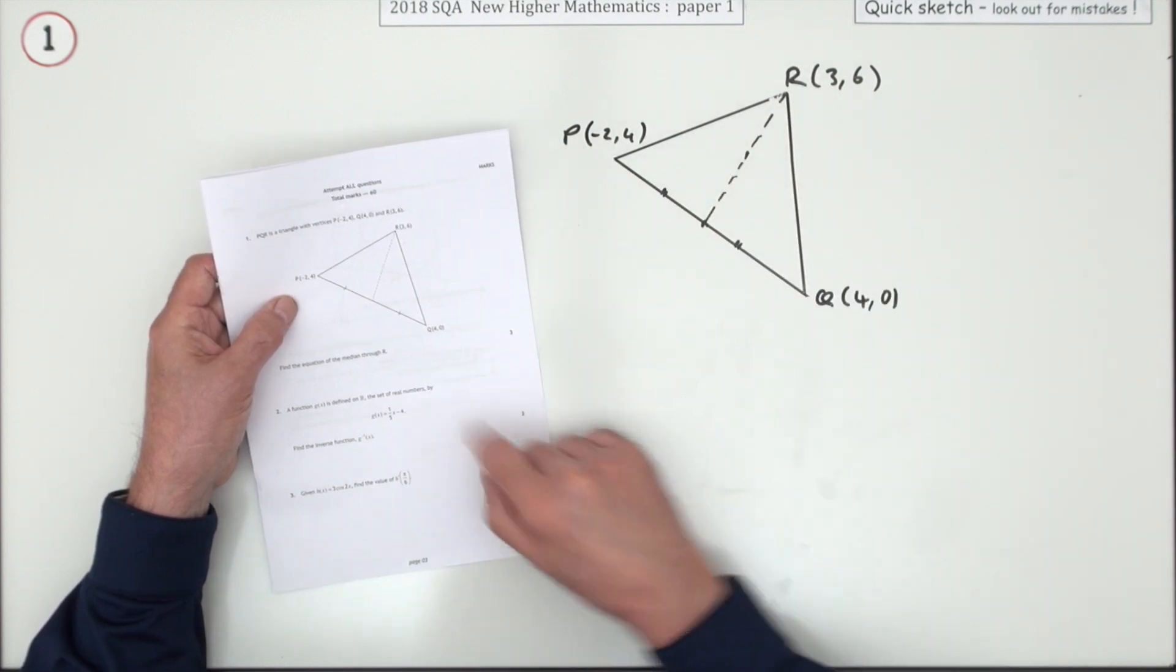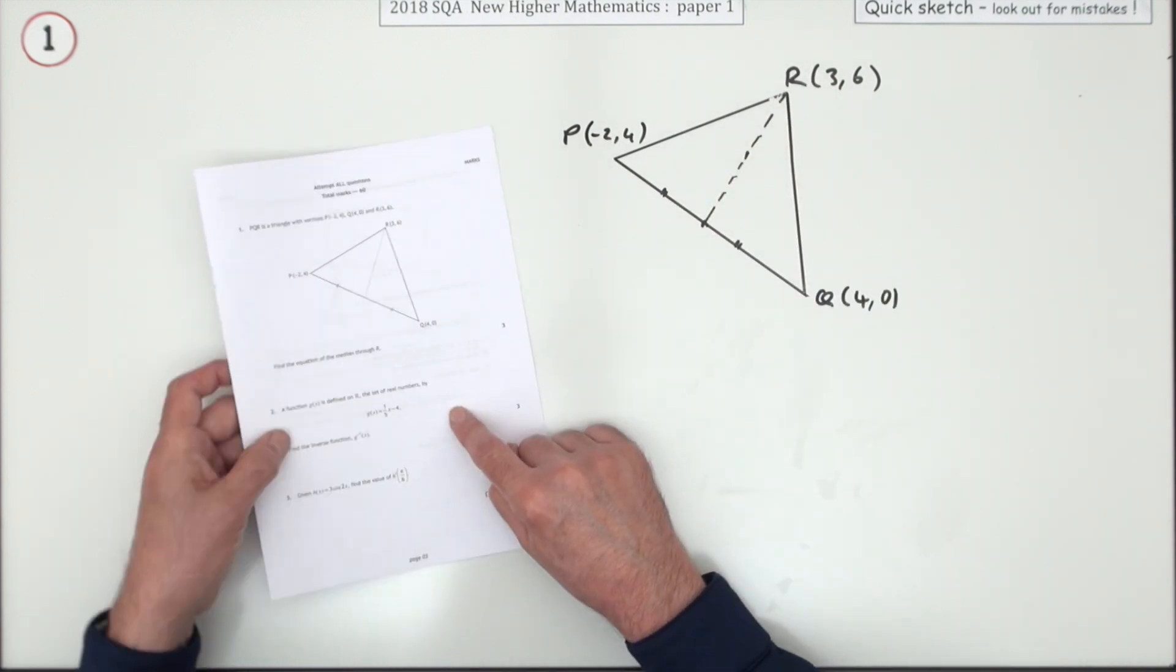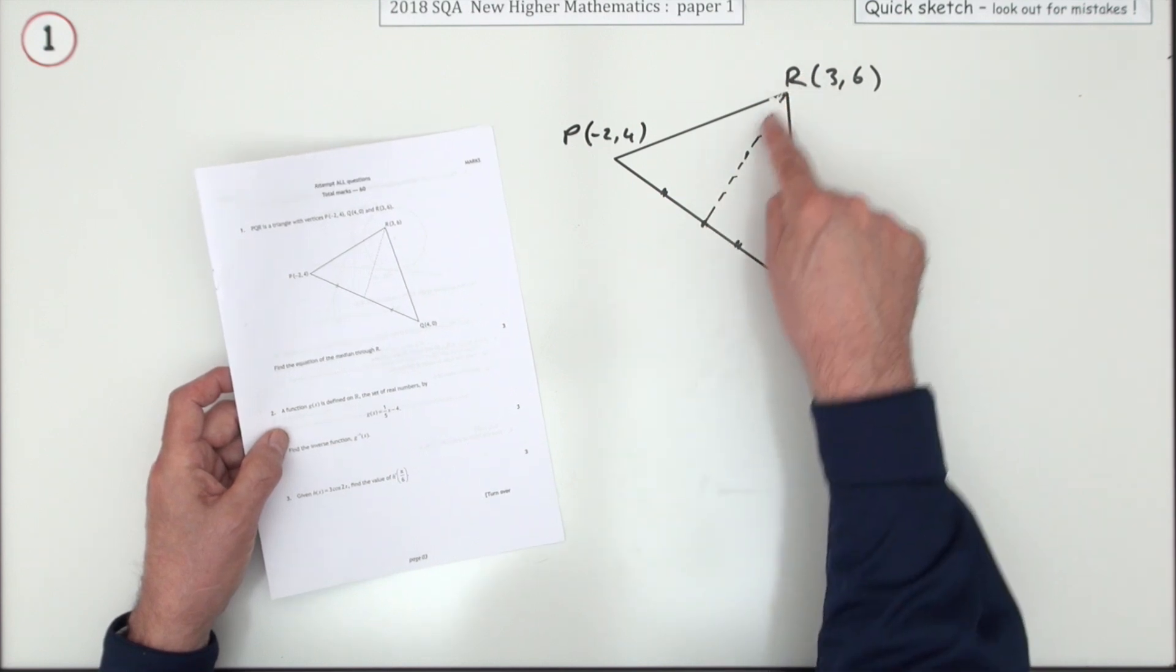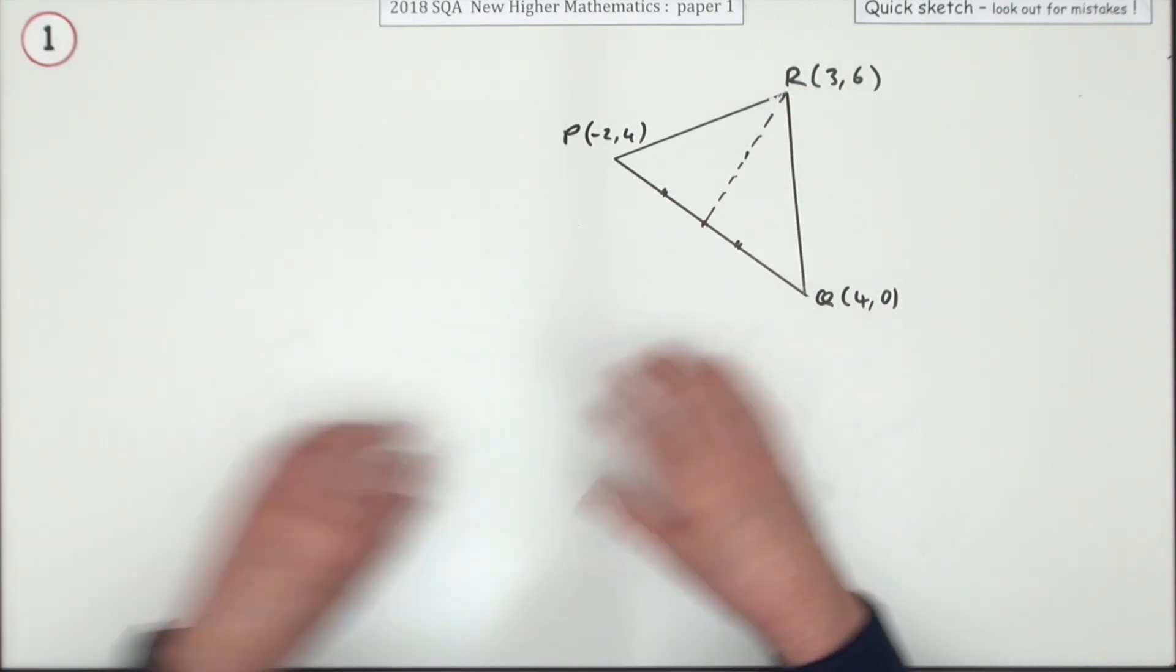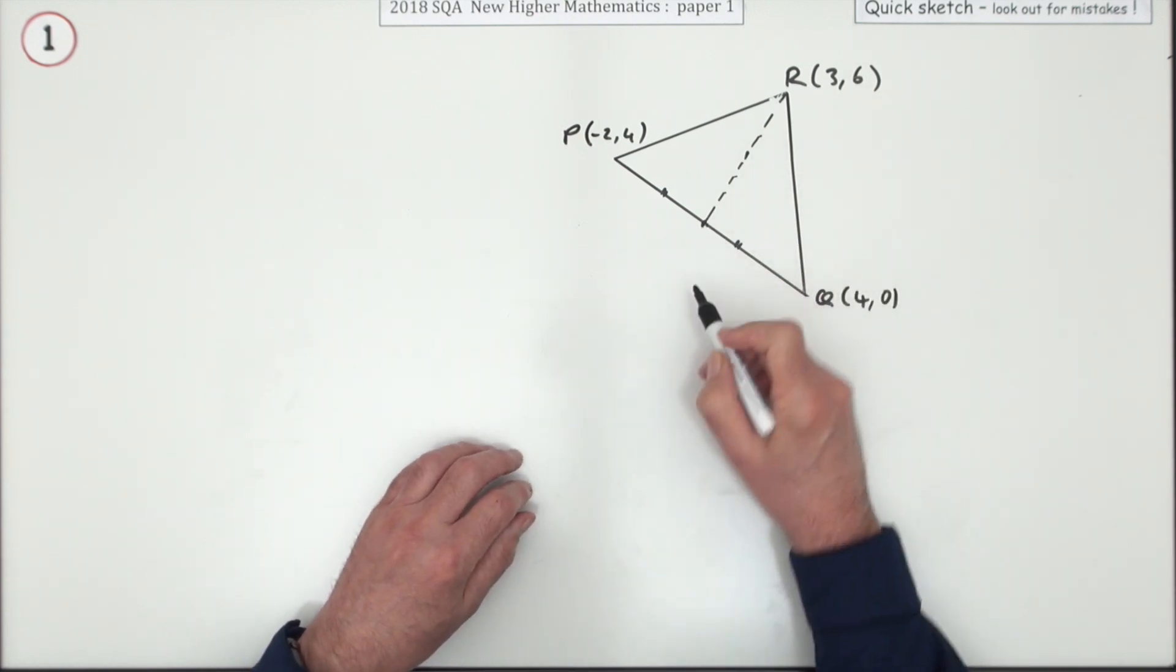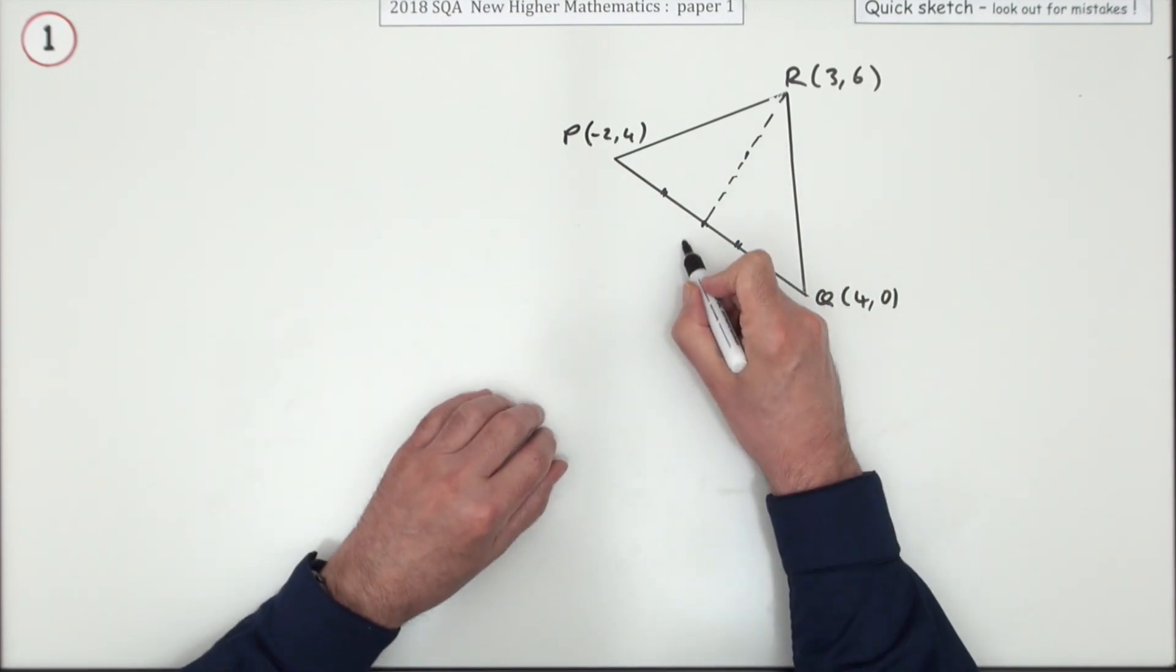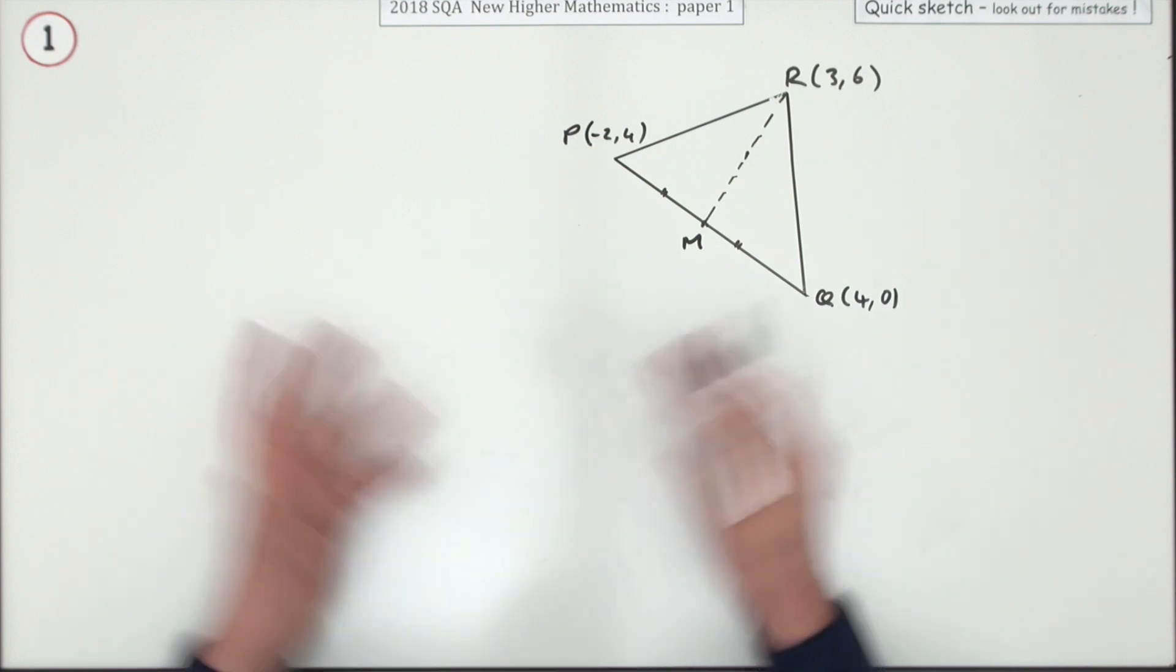For three marks, what's the equation of the median through R? Here it even draws it in to show you what the median looks like. In case you didn't know, the median goes to the middle of the other side, indicated by those equal strokes. I'll call that M.